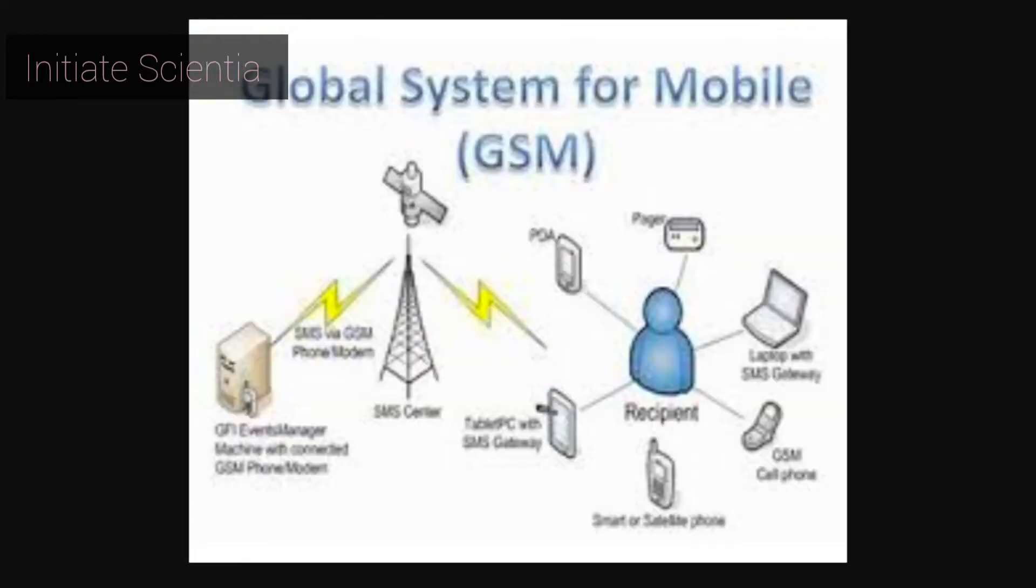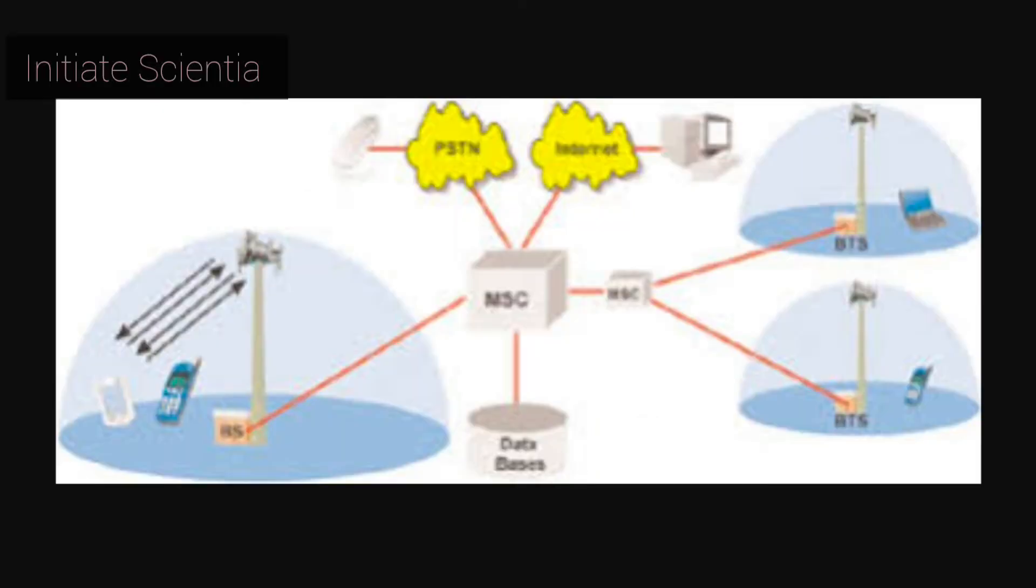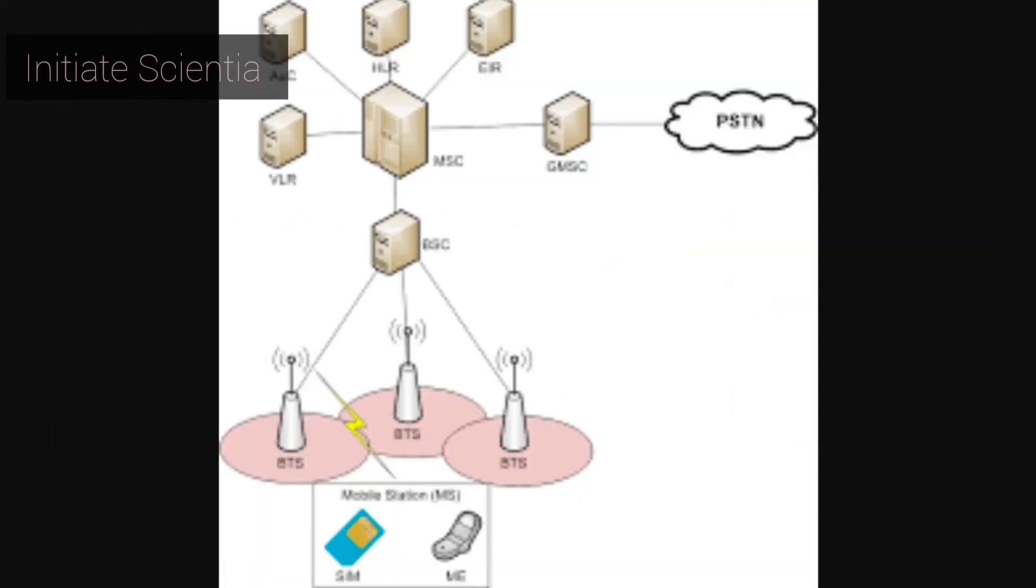The network is structured into several discrete sections. Base station subsystem, the base stations and the controllers are present. Network and switching subsystem, the part of the network most similar to a fixed network, sometimes just called the core network.